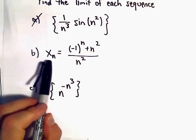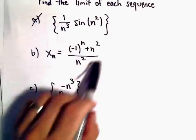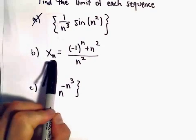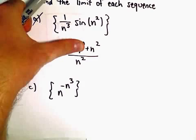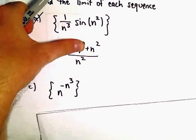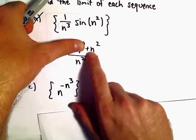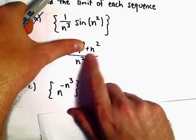Intuitively, what's going to happen if you plug in larger and larger values for n? Let's forget about the first part for a moment. As we plug in larger and larger values for n, we're going to get some big number squared over some big number squared. It's the same number.